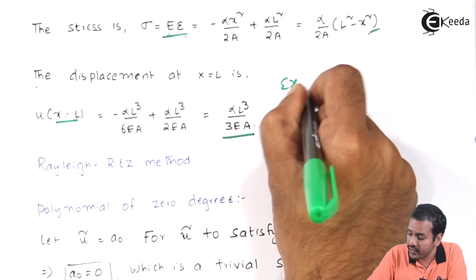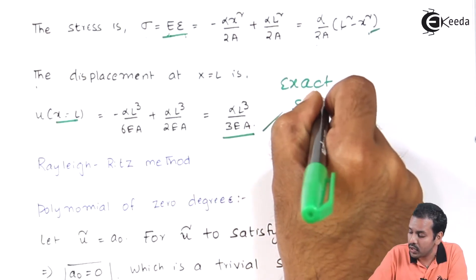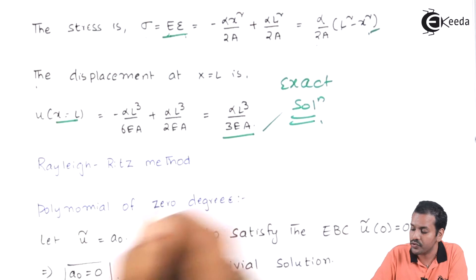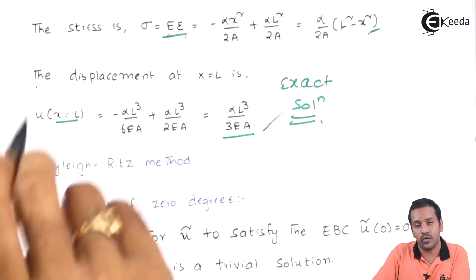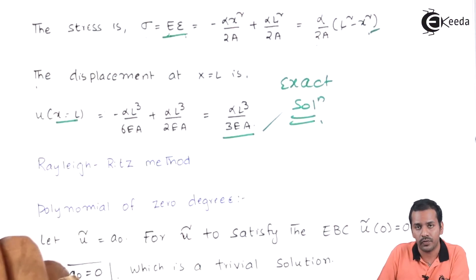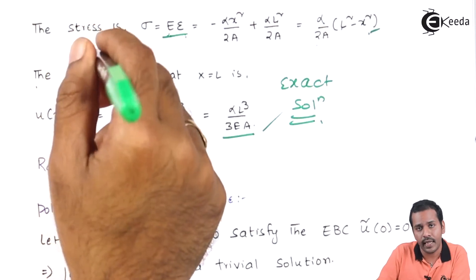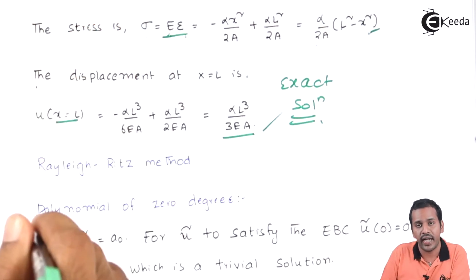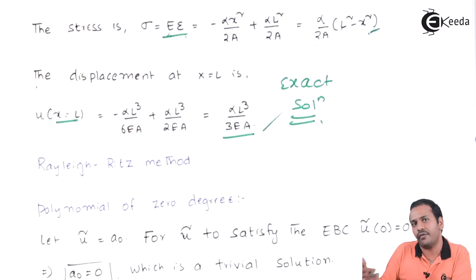Now we have the exact solution in hand. Let us solve the same example using the Rayleigh-Ritz method with different polynomial trial functions of different orders.